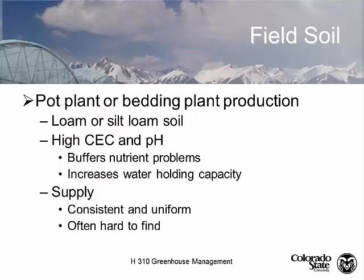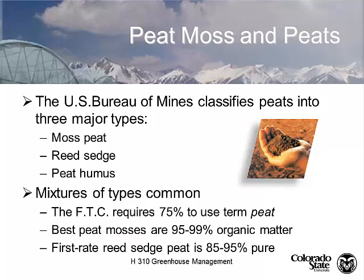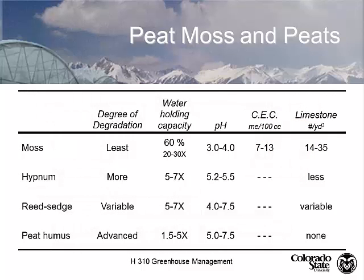When you're shipping field soil, you're shipping real estate. By and far, most people are now using peat. Peats are classified into three major types: moss peat, reed sedge peat, and peat humus — all described differently, and the common consumer doesn't know the difference. The Federal Trade Commission requires that at least 75% of material in a bag labeled peat must be some kind of peat. The best peats are 95 to 99% peat. Reed sedge peat is typically 85 to 95%.